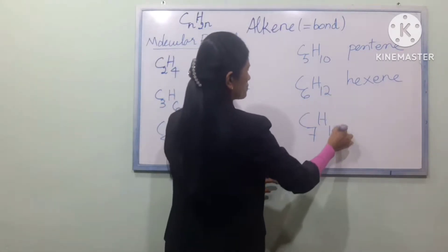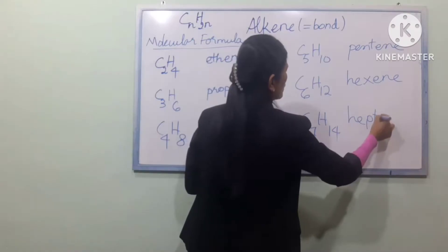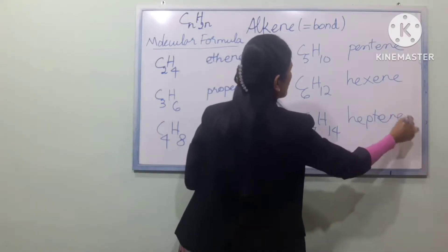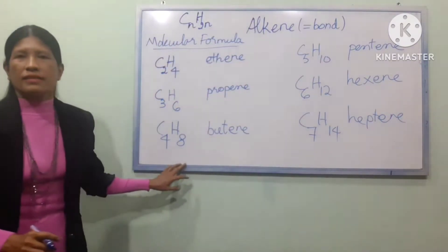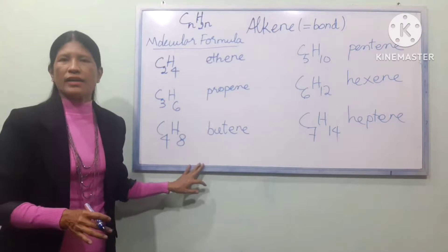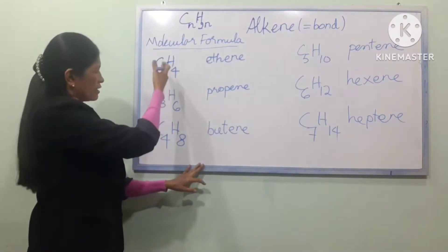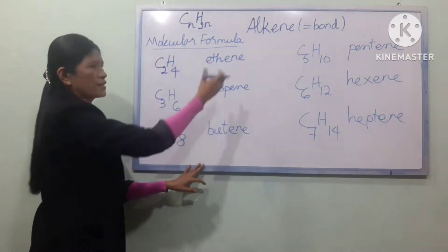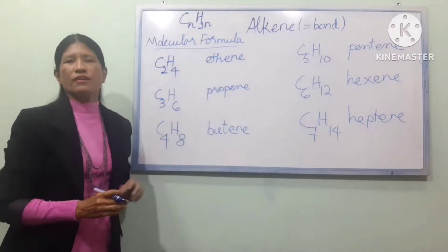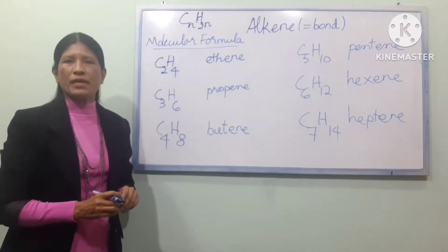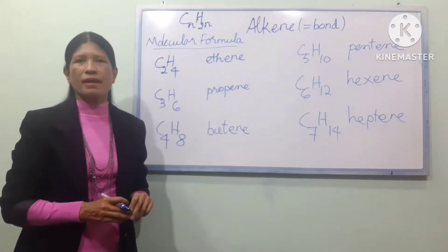C7 gives us C7H14, named heptene — H-E-P-T-E-N-E. So the general formula covers carbon numbers 2, 3, 4, 5, 6, 7. The molecular formula follows CnH2n throughout.